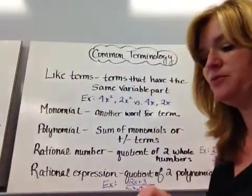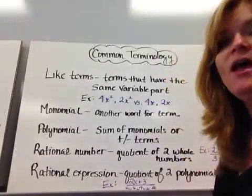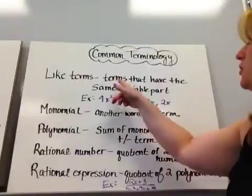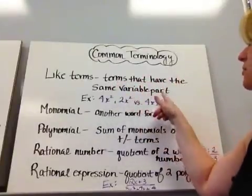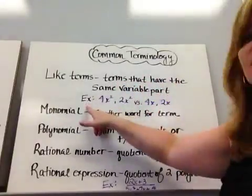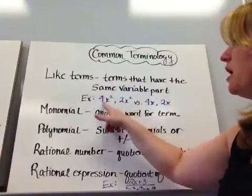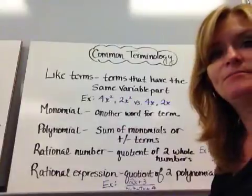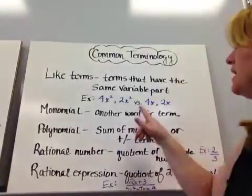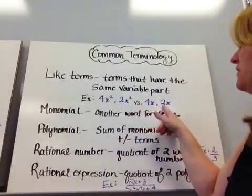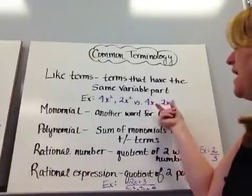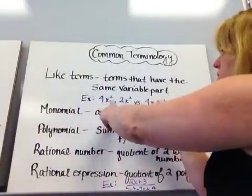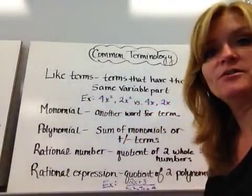Okay, let's talk about some common terminology that you're going to need to know, and I want you to write these all down. The first one is like terms. Terms that have the same variable part. Examples, 4x squared and 2x squared are like terms because their variable part is the same. I can combine them. Just as the 4x and the 2x are like terms, I can combine those two. I can't combine these two or these two because they're different variable parts.